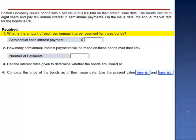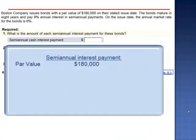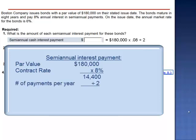What is the amount of each semi-annual interest payment for these bonds? The amount of the interest payment is calculated by taking the par value, $180,000, multiplying by the contract rate, 8%, and then dividing by 2. $180,000 multiplied by 8%, divided by 2, is $7,200.